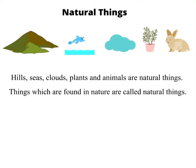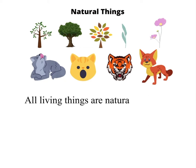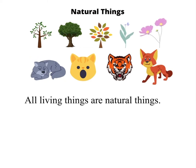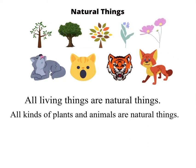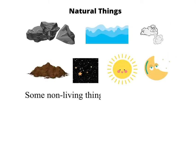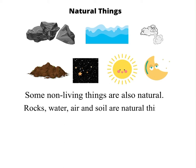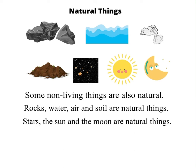All living things are natural things. All kinds of plants and animals are natural things. Some non-living things are also natural. Rocks, water, air, and soil are natural things. Stars, the Sun, and the Moon are natural things.